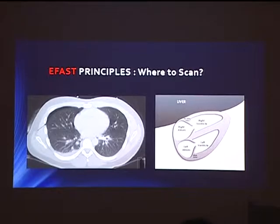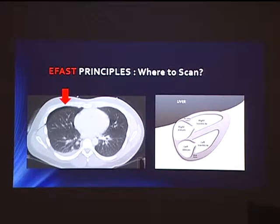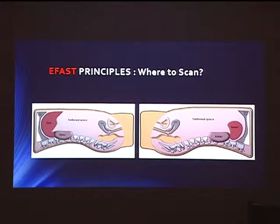eFAST focuses on very basic things. Where do we scan? We know air rises, so the scanning position will be the anterior surface of the lung. Another scanning position is the sub-xiphoid, where we assess the pericardium for hemopericardium. And of course, fluid sinks — you want to look for spaces where fluid or blood will collect.